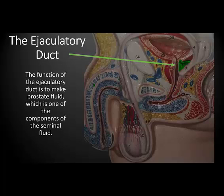This is the ejaculatory duct. The ejaculatory duct is part of the prostate gland. Its function is also to assist in making prostate fluid, which is one of the components of seminal fluid.